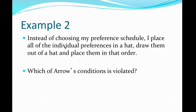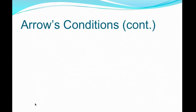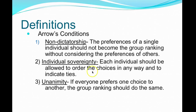Example two: instead of choosing my preference schedule, I place all of the individual preferences in a hat, draw them out of the hat, and place them in order. Which of Arrow's Conditions is violated? Each individual should be allowed to order them in any way they want to and indicate ties — I think that's what we're violating, because I'm determining the order just by drawing out of a hat.